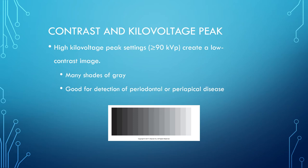High kilovoltage settings — greater than or equal to 90 KVP — create a low contrast film with many gradual shades of gray, like an ombré effect. This is better for detecting periodontal and periapical disease because it shows subtle changes in bone density. However, cavities are harder to detect on low contrast films. High KVP equals low contrast: they are inversely related.